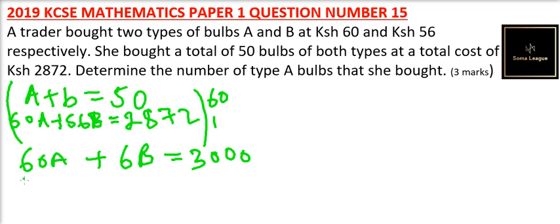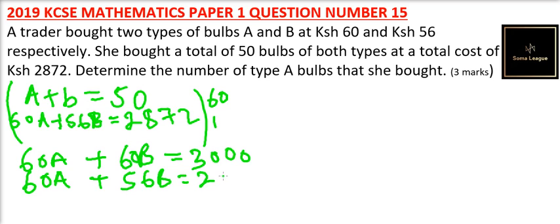The second equation we are not changing. So we have 60A plus 56B equals 2,872.